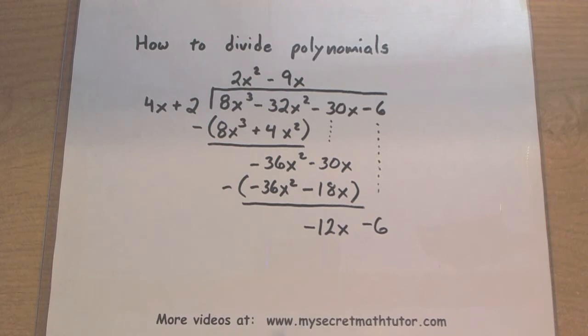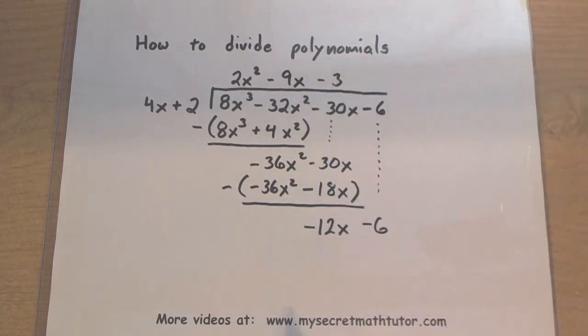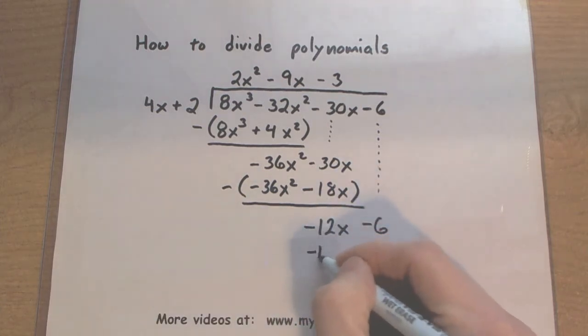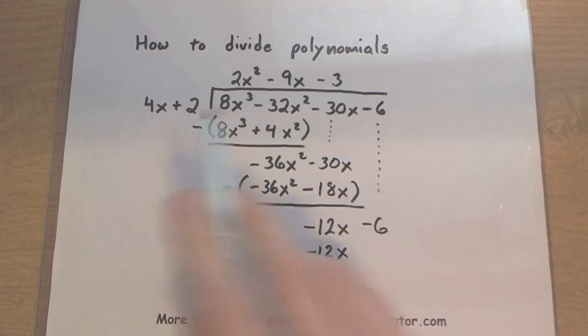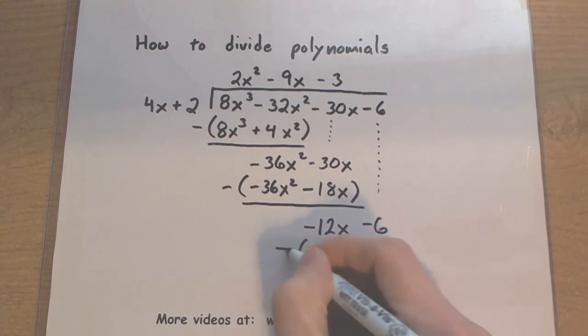And do this one more time. So 4 multiplied by what is a negative 12? Well a negative 3 will do it. So negative 3 times 4x. Negative 12x. Negative 3 times a positive 2 is negative 6. So we're going to subtract that away.